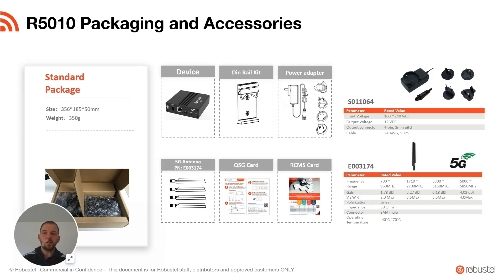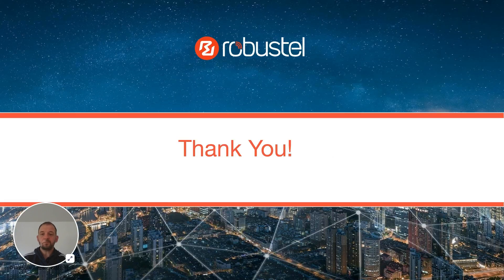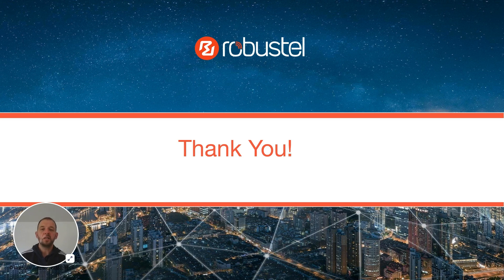Just a quick look at what's in the box: you get the device, a DIN rail kit, a power adapter, and four 5G antennas — the correct frequency antennas, and all four are included. There's also a global power adapter, to make life easy if you're not sure where these are going to end up. In summary, the R5010 is a great new small form factor 5G router, and we're very interested to see how it fares in broadband backup and failover applications.